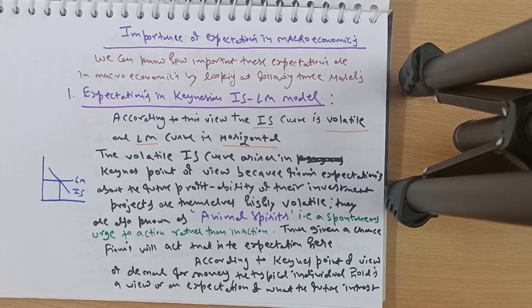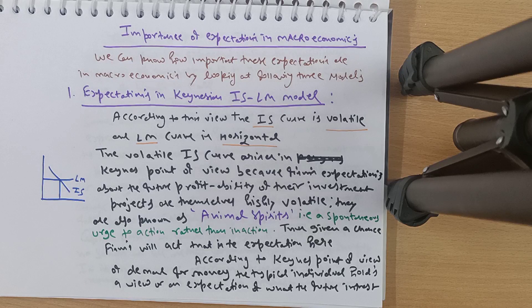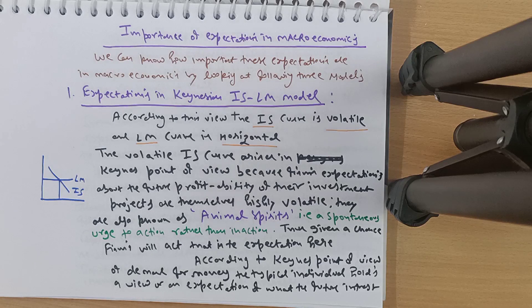Animal spirits means that just as an animal will react whether provoked or shown affection — it will not sit idle — firms behave similarly. If firms see any investment opportunity in the future, they will act on it. Keynes' expectation was that if any policy benefiting investors or producers is introduced, they will certainly react. Given a chance, firms will act — that is the expectation here.